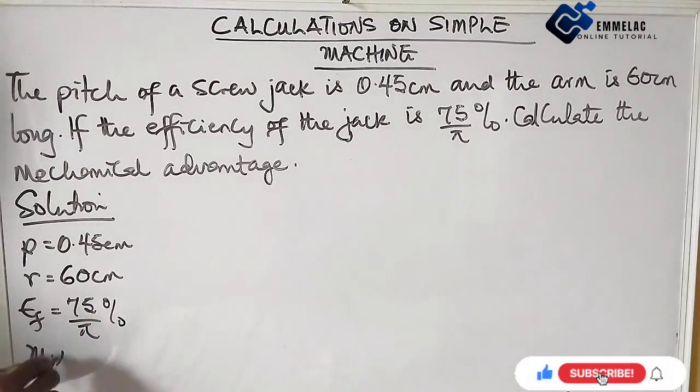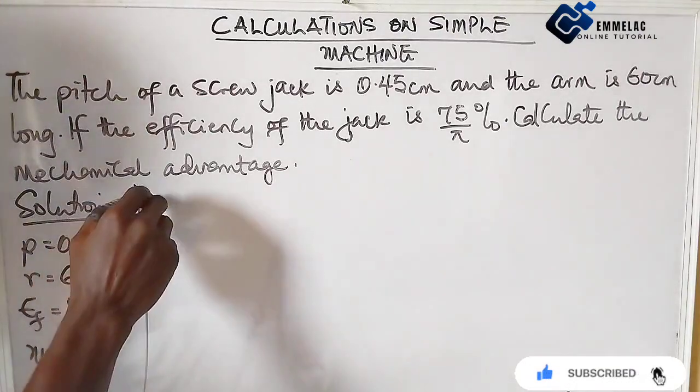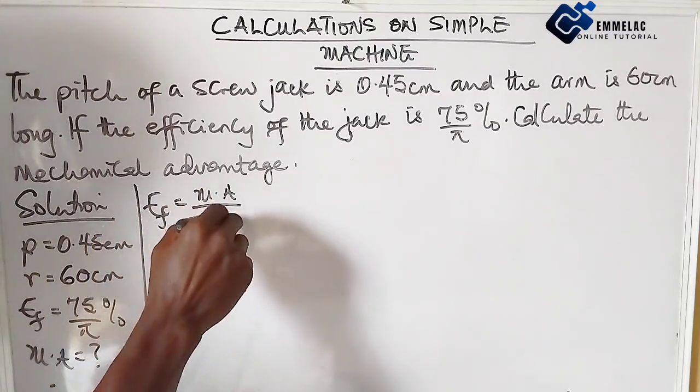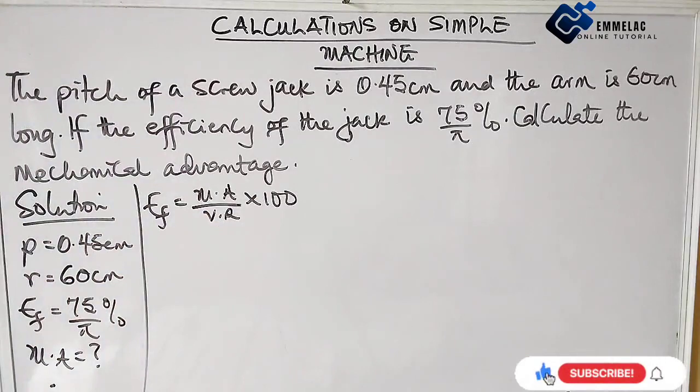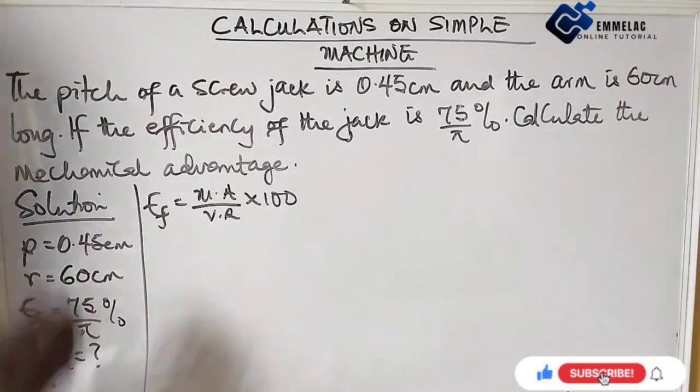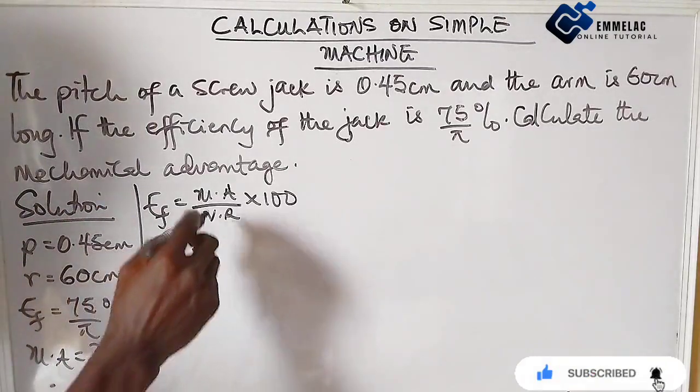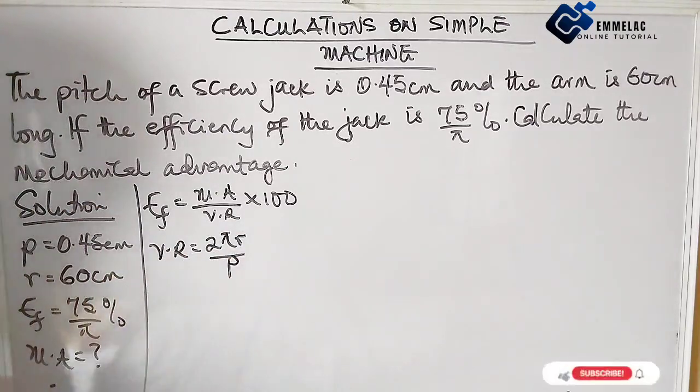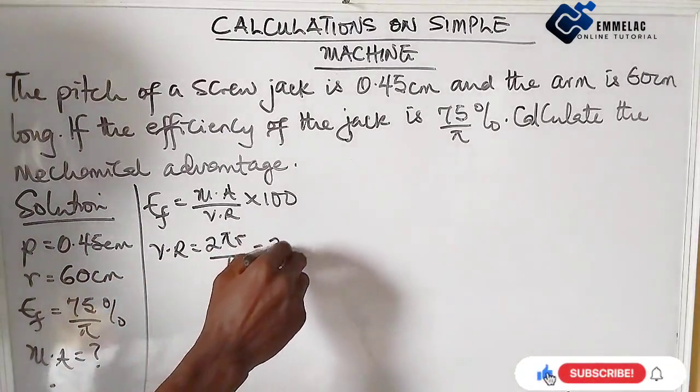We have to find the mechanical advantage. We know that the efficiency equals mechanical advantage over velocity ratio times 100. Now, the velocity ratio for a screw jack is given as 2πr over p, which is the pitch. So here we can say this is 2π.